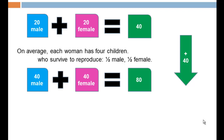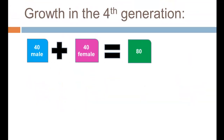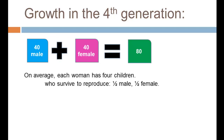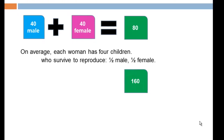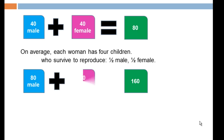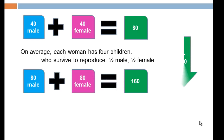Notice that the growth rate is staying the same, but the numerical increment of growth is getting larger. Going from the third to the fourth generation, we take 40 times four and get 160 — made up of 80 males and 80 females. The numerical increment of growth is now 80 individuals.